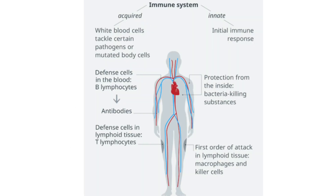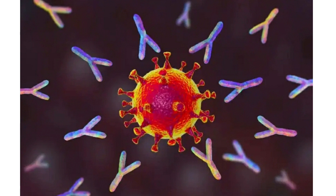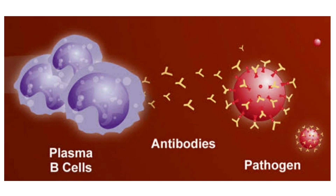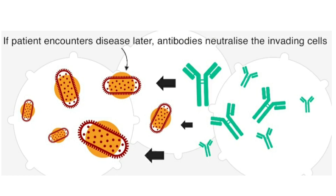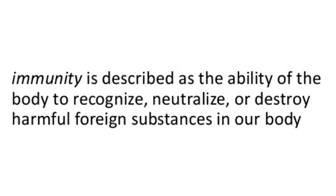Apart from the natural defenses, the body also has another special system of defense known as the immune system. When any pathogen enters the body, the immune system makes antibodies. These antibodies are proteins that will attack the foreign body that enters and prevent diseases. Specific antibodies are produced in the blood to fight against the microorganism. After the person recovers, the antibodies remain in the blood for some time and prevent the disease from occurring again. This type of natural resistance developed by the body is called immunity.